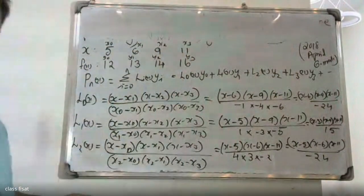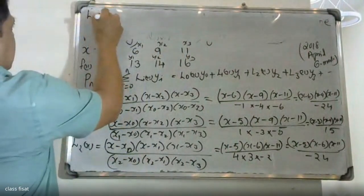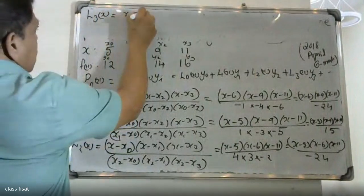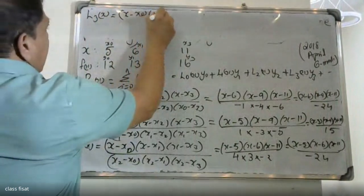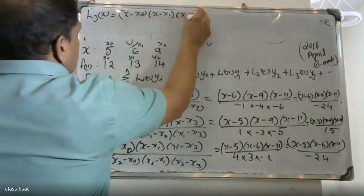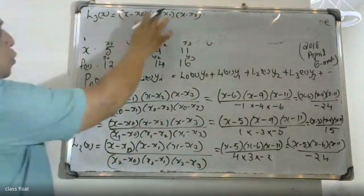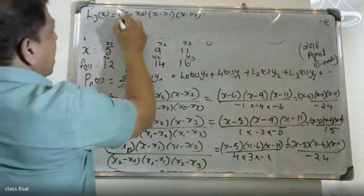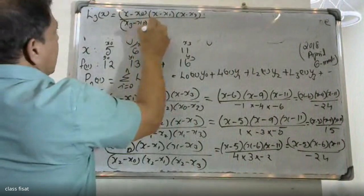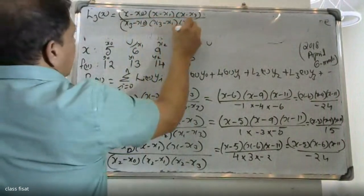For L3(x), the formula is: numerator (x minus x0)(x minus x1)(x minus x2), denominator (x3 minus x0)(x3 minus x1)(x3 minus x2). So L3(x) equals (x minus 5)(x minus 6)(x minus 9) divided by a denominator value.